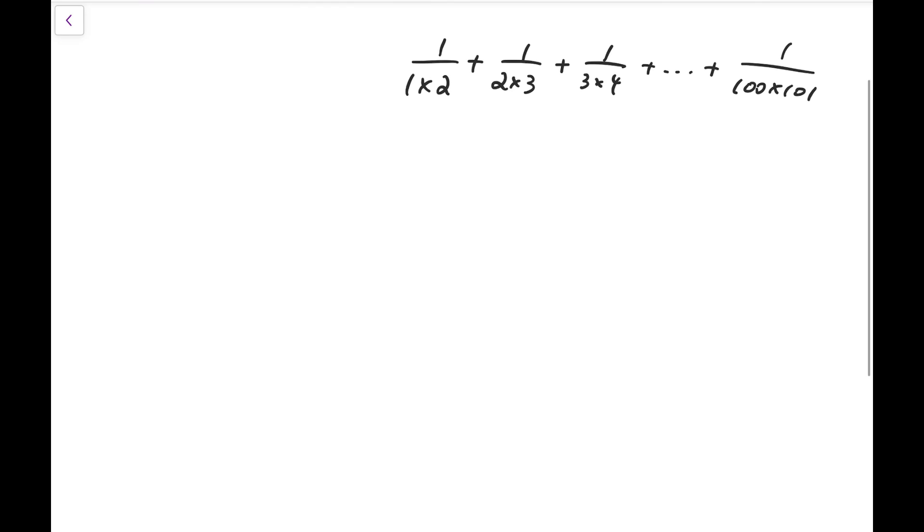One very famous example would be this: adding 1 over 1 times 2, plus 1 over 2 times 3, plus 1 over 3 times 4, all the way up to 1 over 100 times 101.